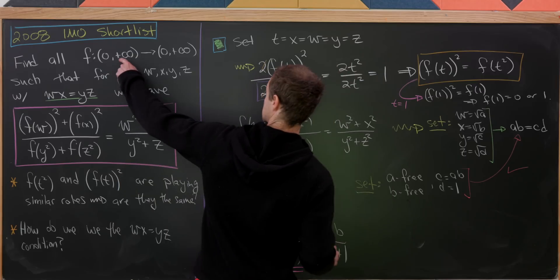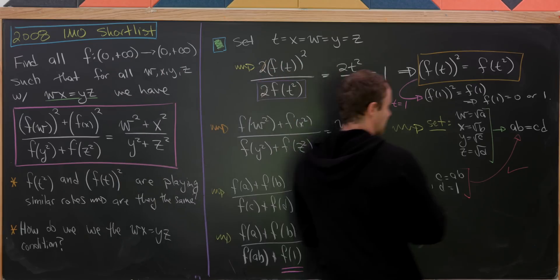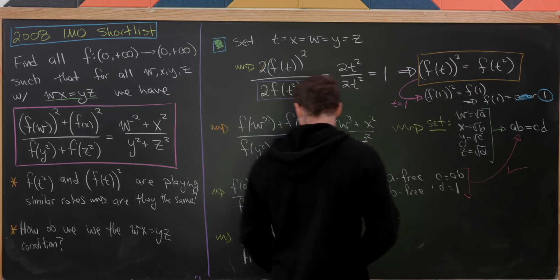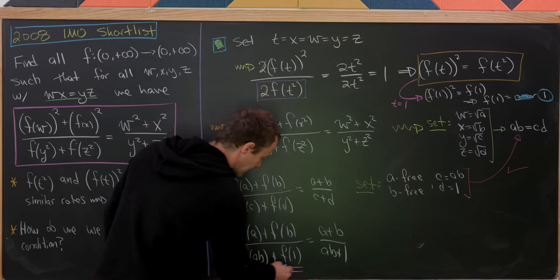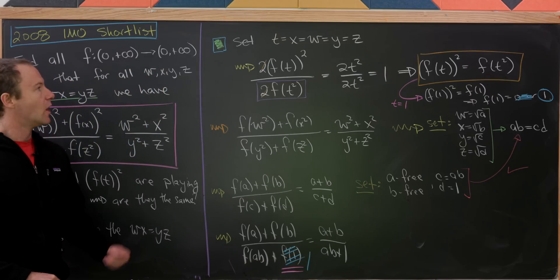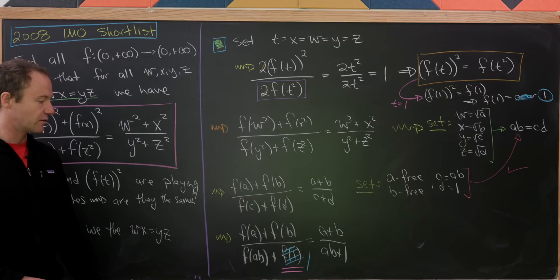But of course, since we're in positive real numbers here, it's not allowed to be zero. So that means in fact, we have f(1) equals 1. So that means I can take this and replace it with simply the number one. Let's start at the top of the next board with that equation.